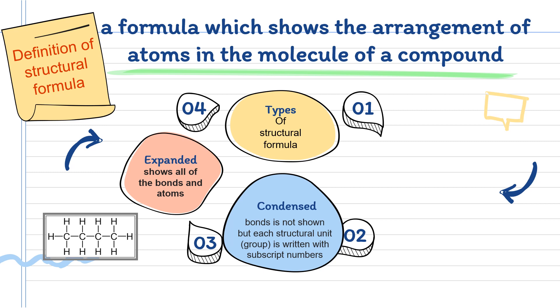The second one is condensed structural formula. In this condensed structural formula, the bond does not show the single bond between carbon and hydrogen atoms, but double and triple bonds are shown.